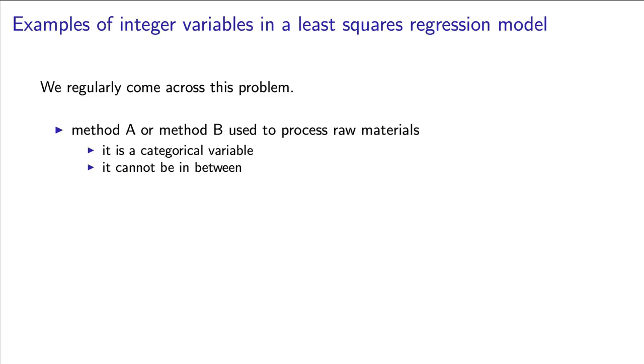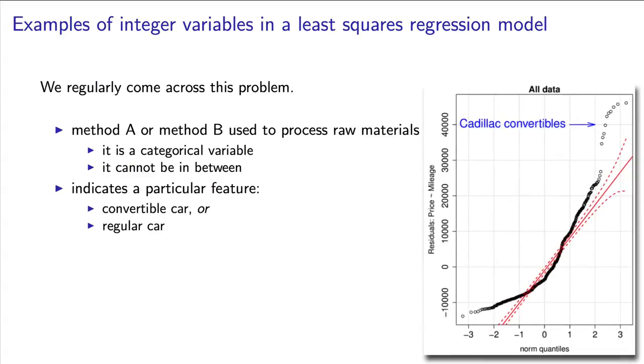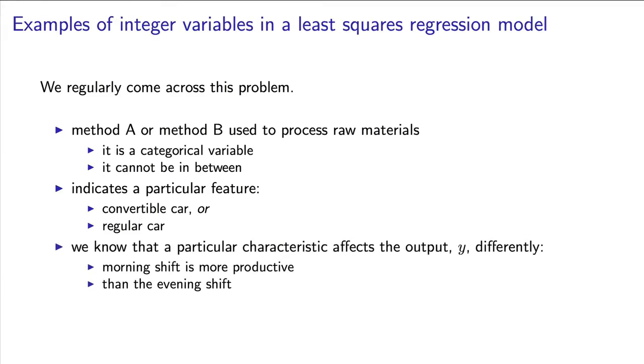It is not a continuous variable. You can't process the material midway between A and B. If you look back at a prior example on second-hand cars, we had convertible cars and regular cars. How could we have included that information in our multiple linear regression model? What if you wanted to indicate the difference between the morning shift and the evening shift on your process? We might know that the morning shift produces higher yields than the evening shift, so we want to include that knowledge when we make our predictions. All of those are good examples of integer variables.